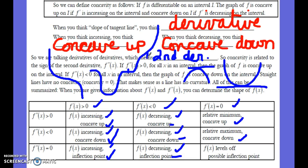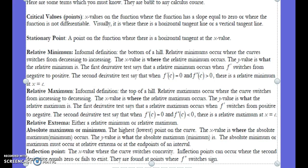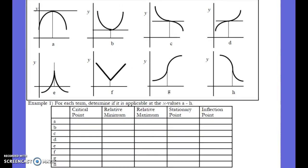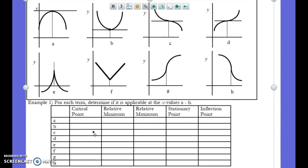You have to have this table understood — there's no way around it — because you'll definitely see analyzing functions on the test, probably more than once. These terms are just a review of what you did in Algebra 2 and pre-calculus. Make sure you're familiar with what each term means. Now let's look at A through H and fill out the chart.